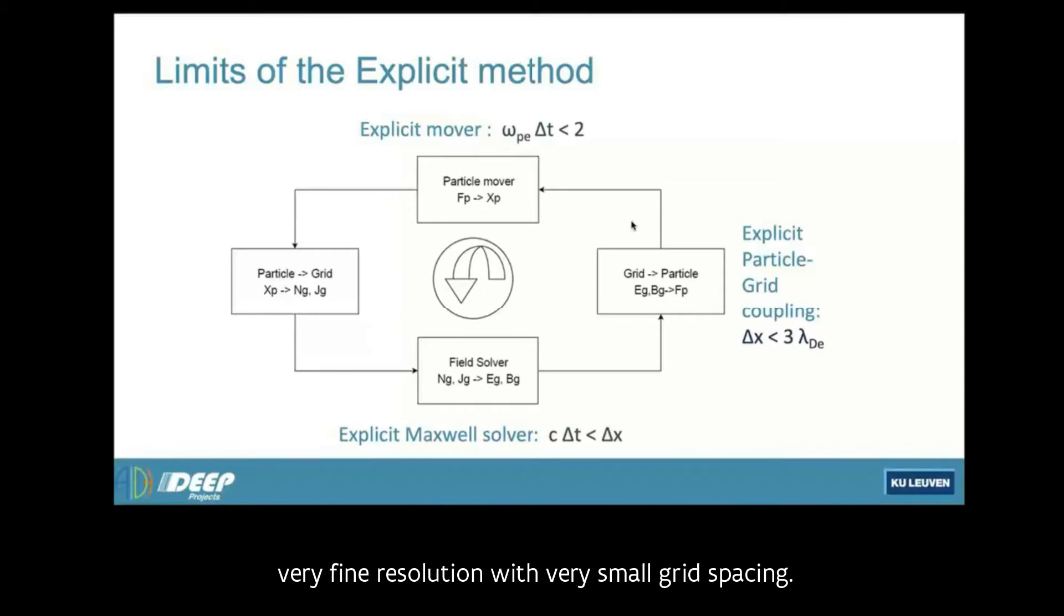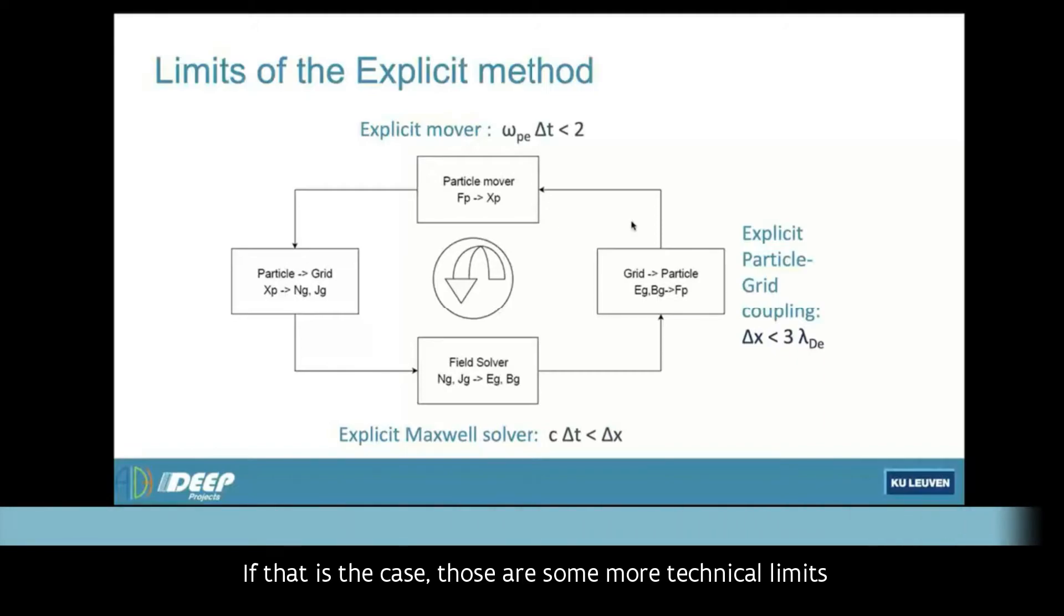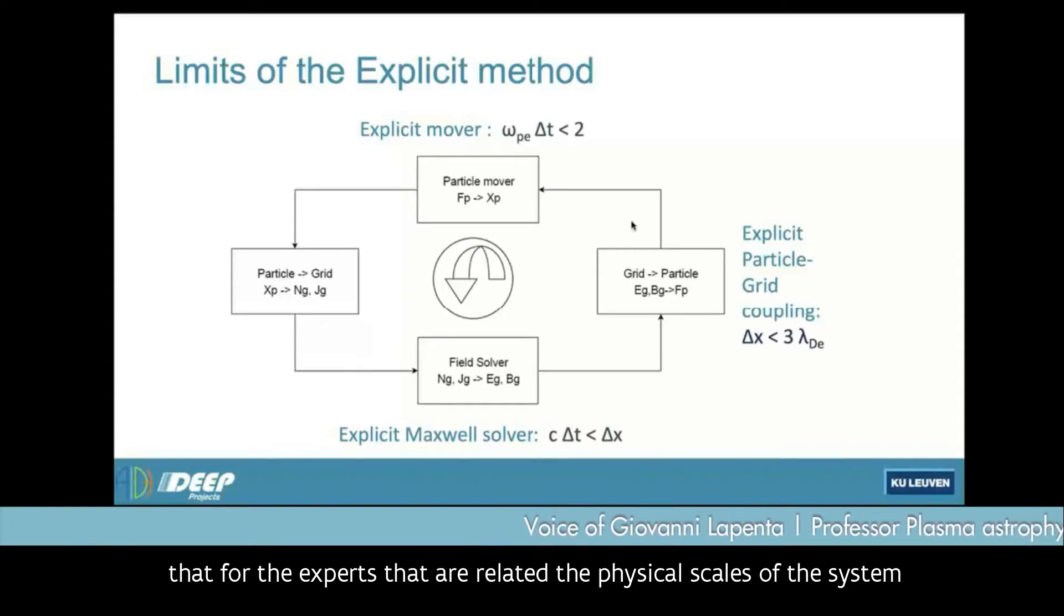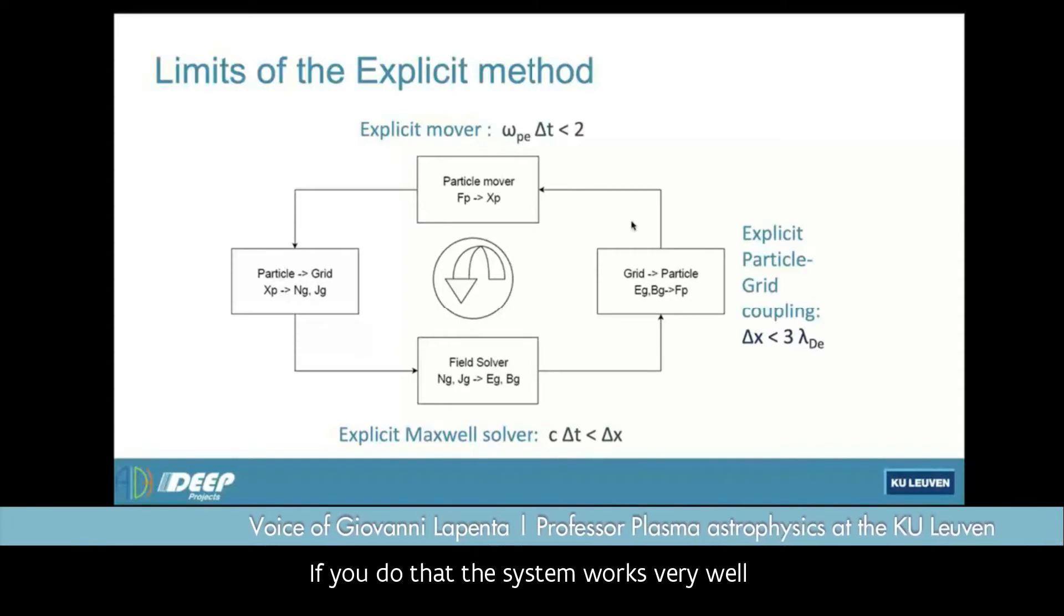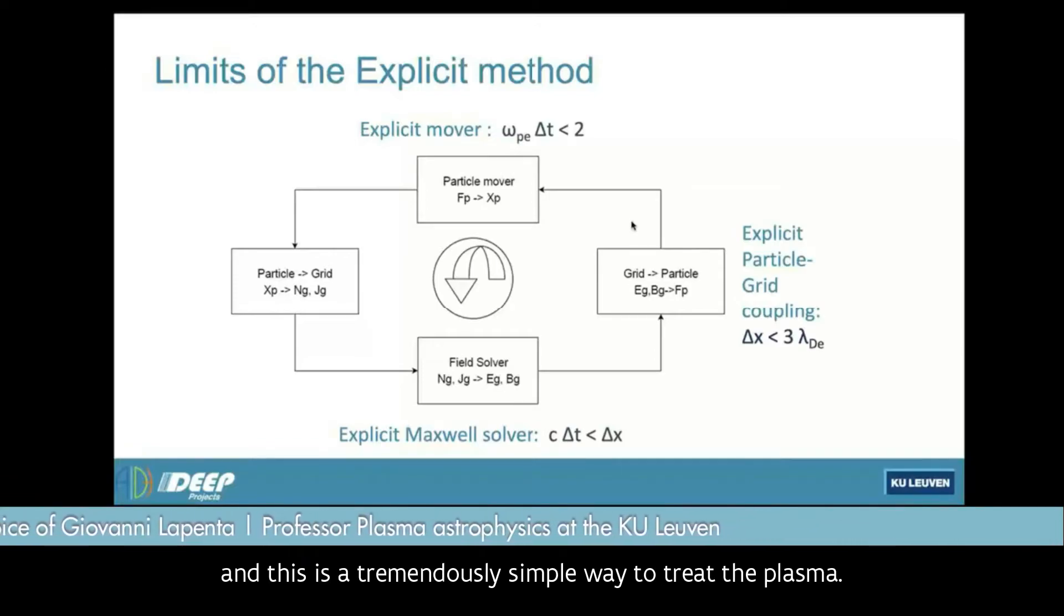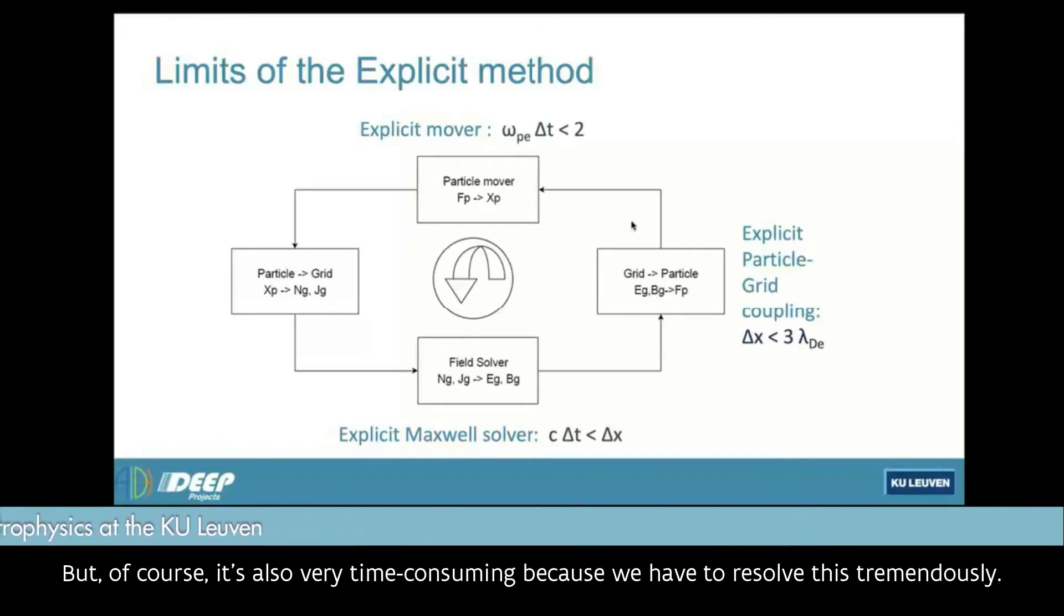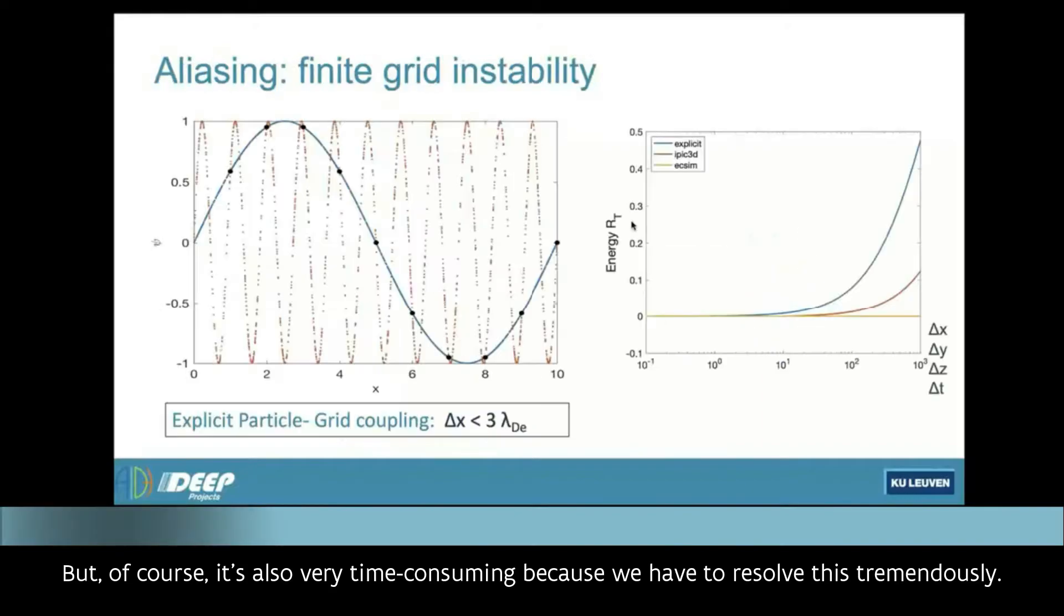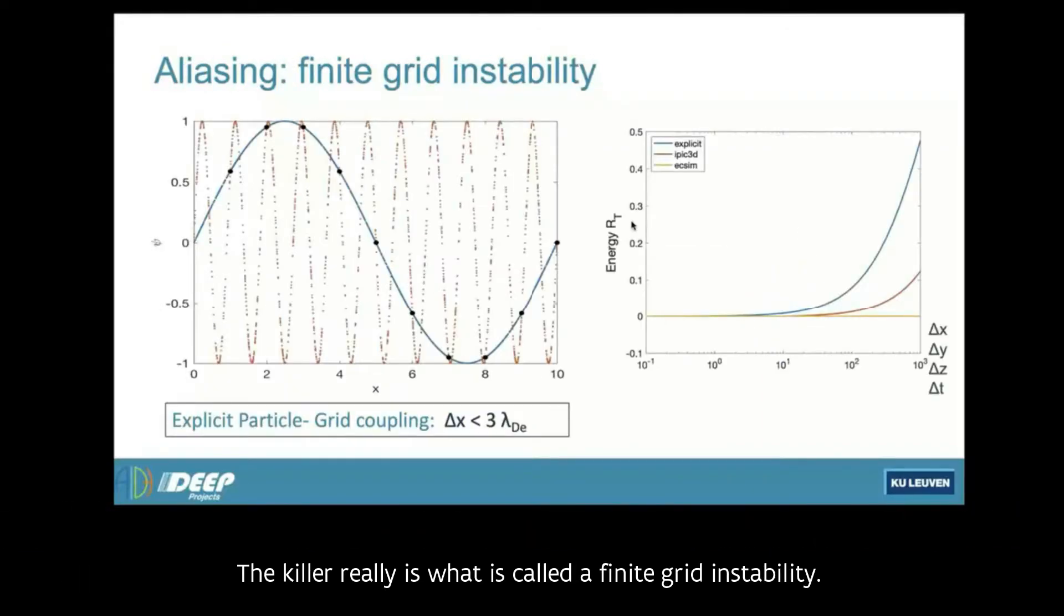And that operation is only valid if you have a tremendously small time step and also a tremendously large resolution. So a very fine resolution with very small grid spacing. If that is the case, those are some more technical limits for the experts that relate the physical scales of the system with the resolution you have to have. If you do that, the system works very well. And this is a tremendously simple way to treat the plasma. But of course, it's also very time consuming because you have to resolve this tremendously.